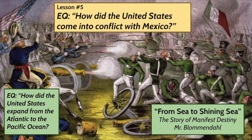Hello, ladies and gentlemen, and welcome to lesson number five in our Manifest Destiny Unit, where we are answering the overall essential question: how did the United States expand from the Atlantic to the Pacific Ocean? Today, we're going to learn about a rather painful and difficult chapter in our history, the war between the United States and Mexico. Today's essential question for this lesson is: how did the United States come into conflict with Mexico?